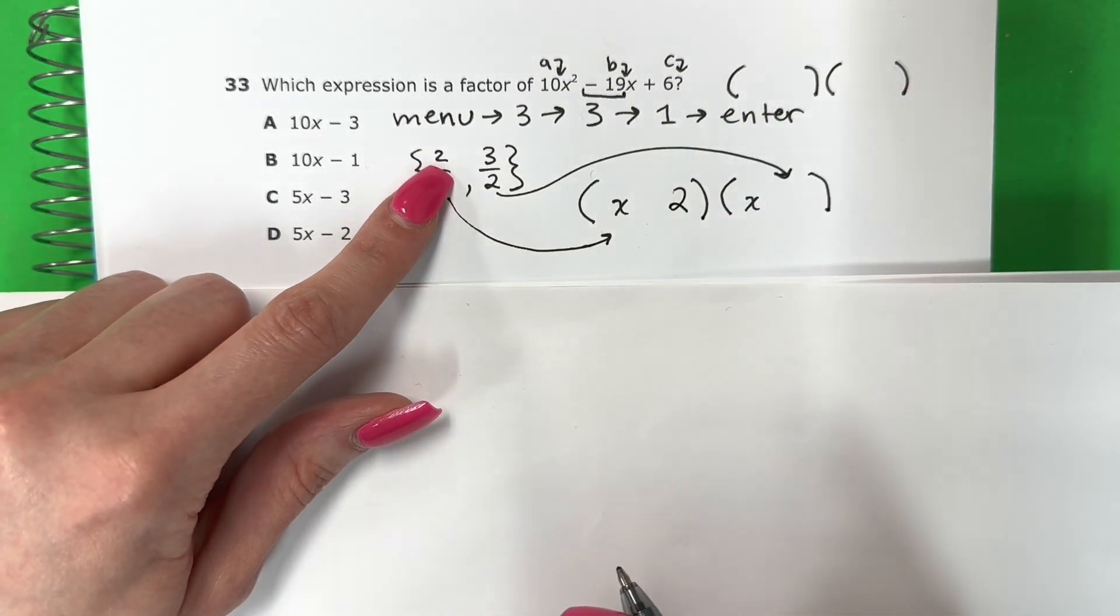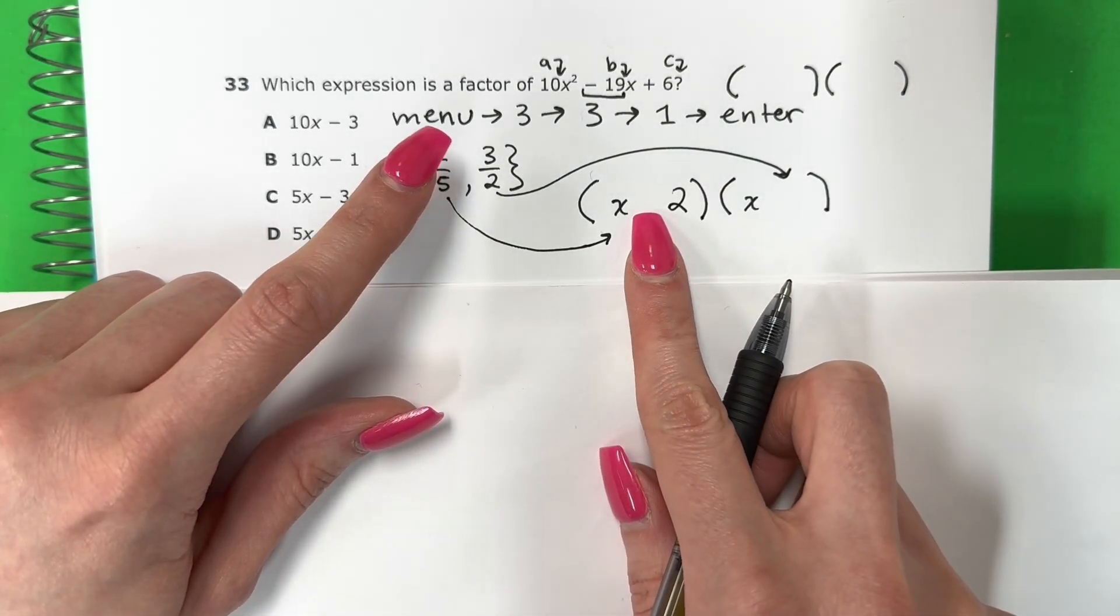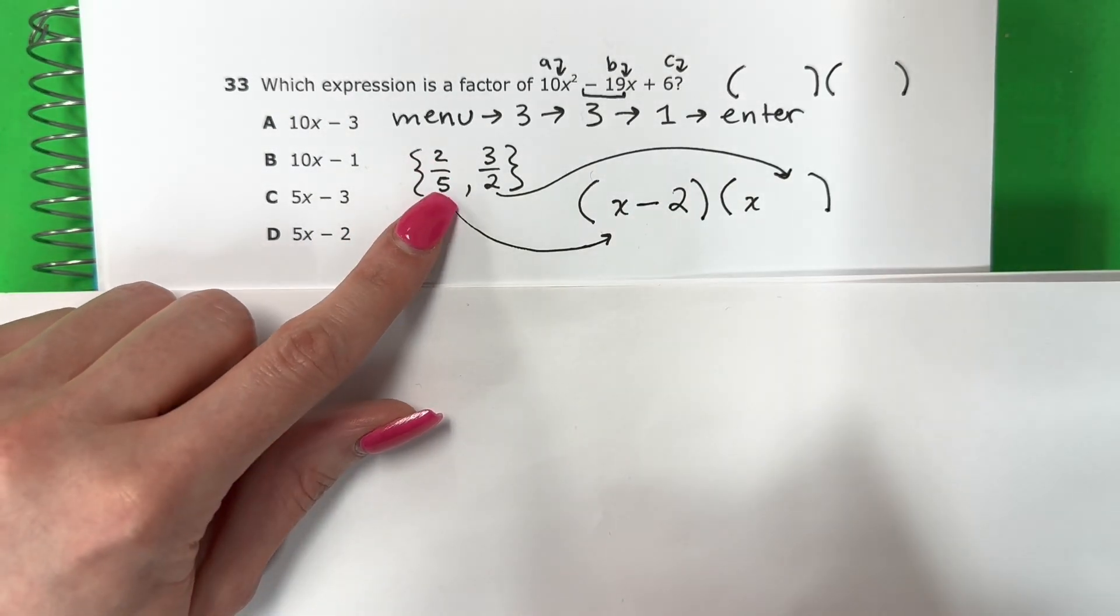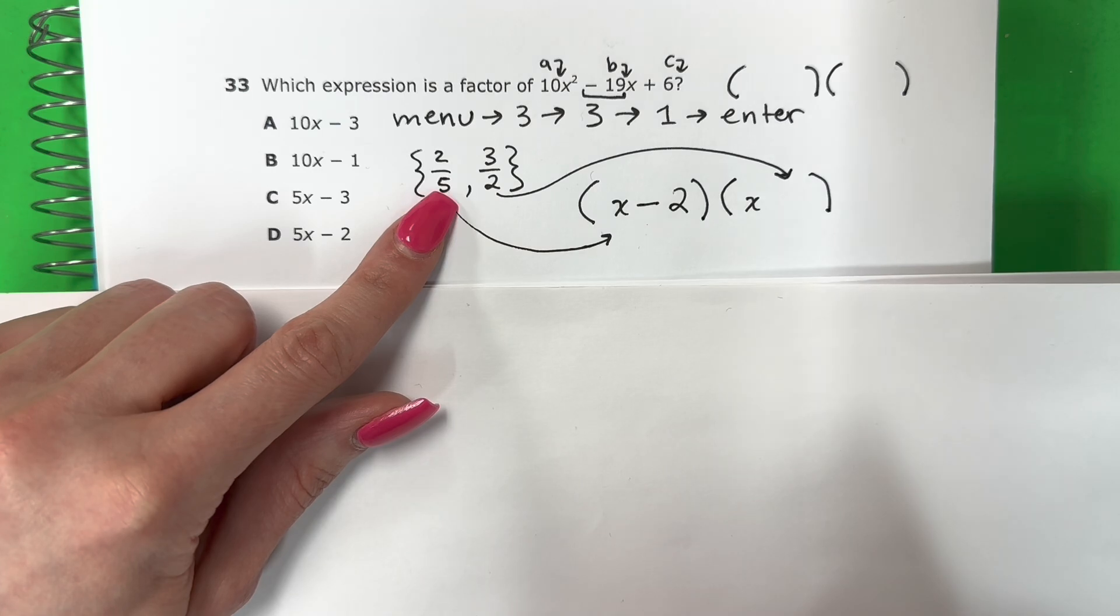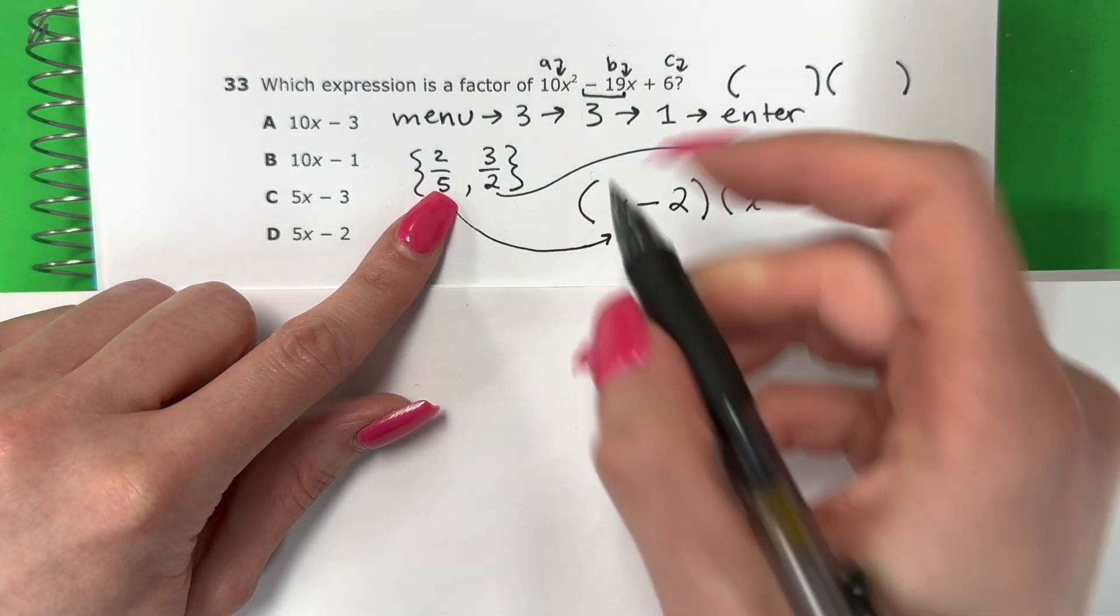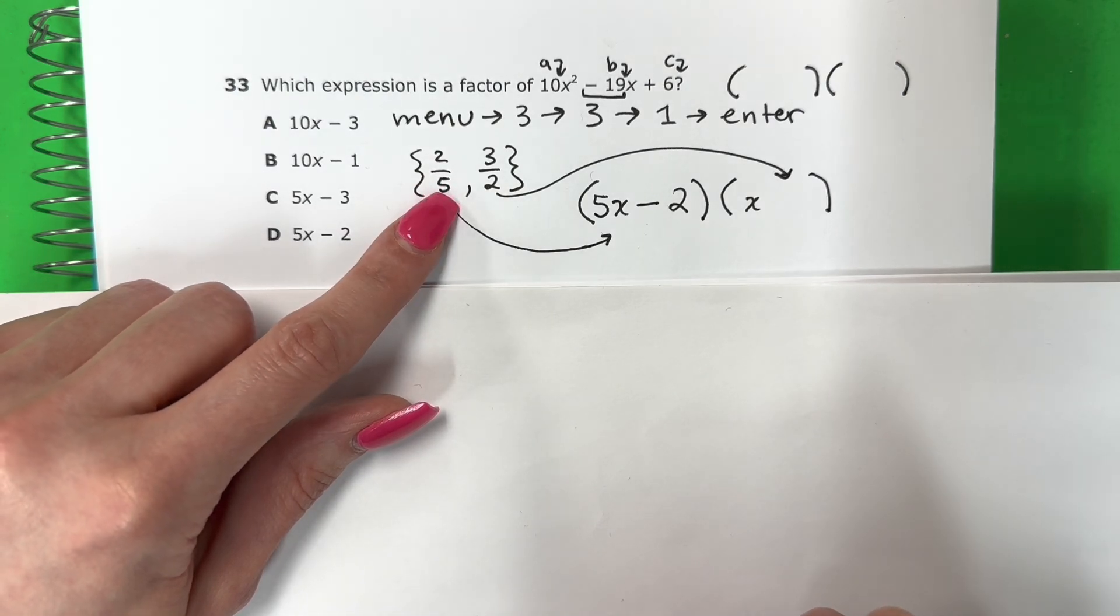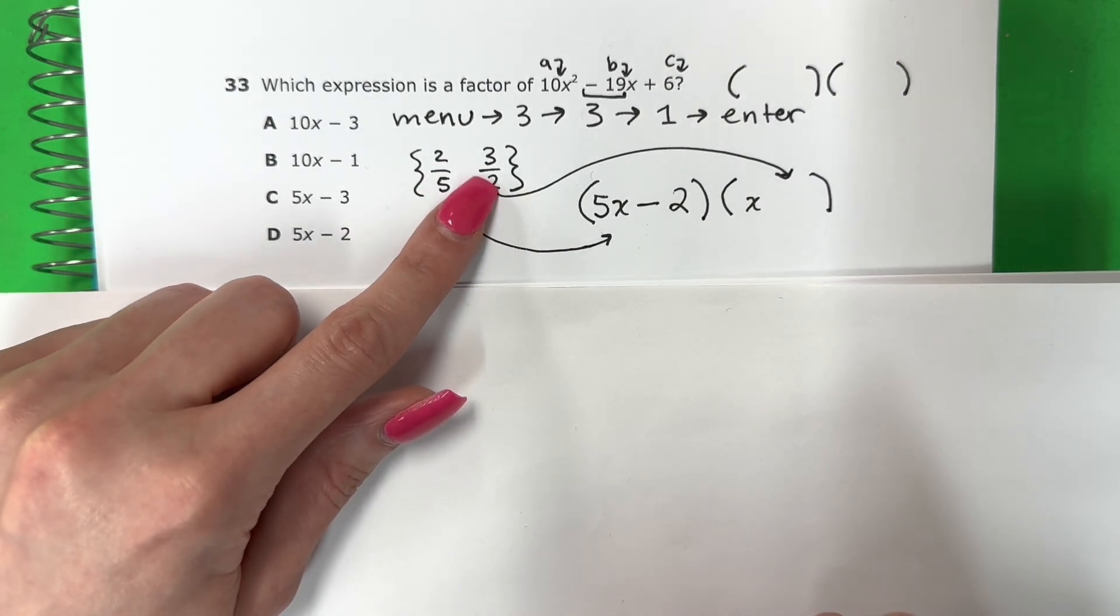Now this is positive two. You have to put the opposite. Este es positivo. Necesito poner el opuesto. So this is minus two. This number that's down, este número que está abajo, you put it in front of the letter. Vamos a poner en frente de la letra. So this is 5x minus two. Same thing here. La misma cosa aquí.